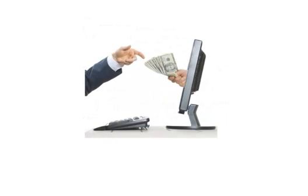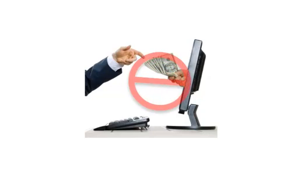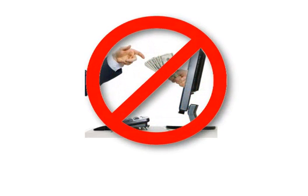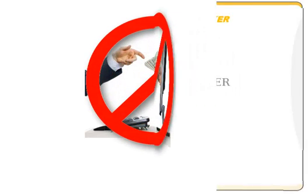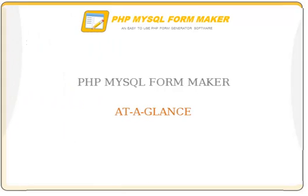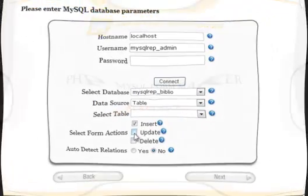Forget the monthly subscription fees. You will pay only once to use PHP MySQL FormMaker on your server forever. In this tutorial, we will build a simple form for managing products in a MySQL database, in which products are saved in one table while product categories are stored in a separate table.